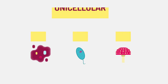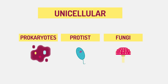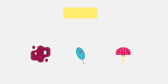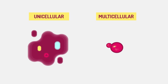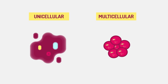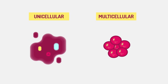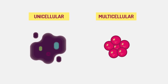As well as prokaryotes, most protists and some fungi like yeast are also unicellular. So there we have unicellular and multicellular organisms.